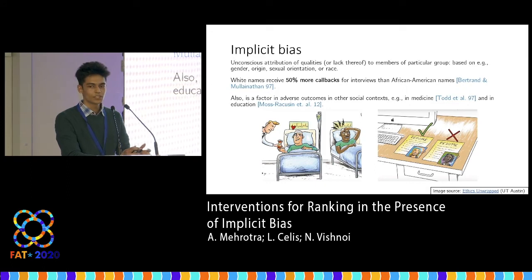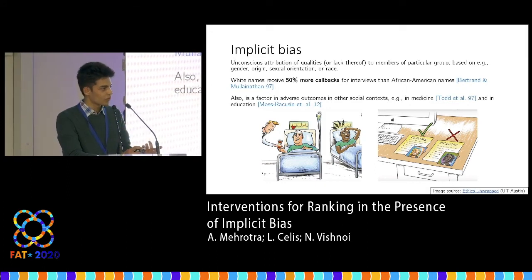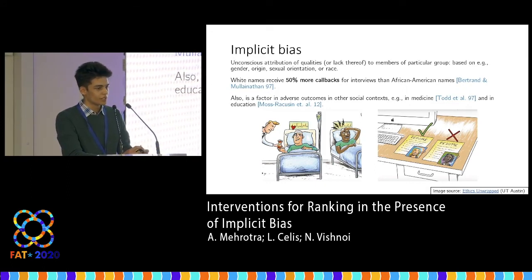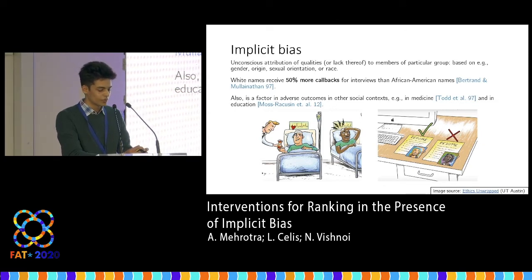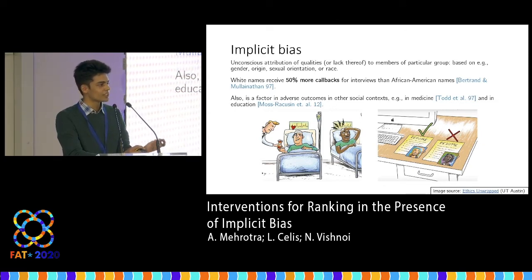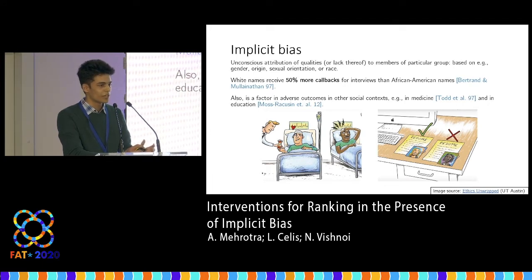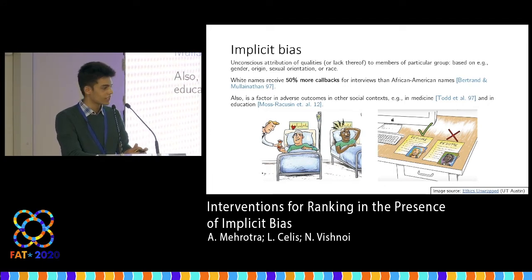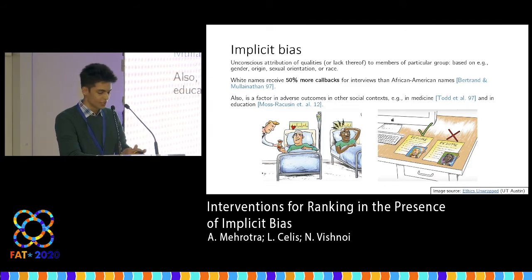For instance, one study found that resumes with white-sounding names received more callbacks for interviews than similar resumes with African American-sounding names. Other studies have also associated implicit bias with adverse outcomes in other contexts, such as in medicine or in education.